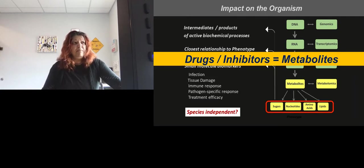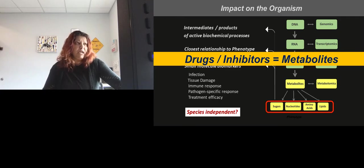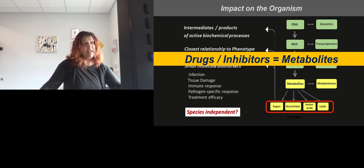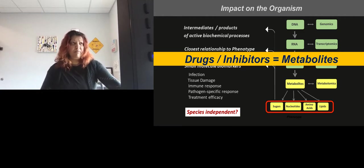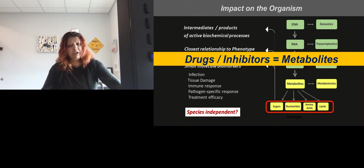Metabolites are intermediates and products of active biochemical pathways, making them the most direct relationship to a phenotype. If you measure them, you can identify small molecule biomarkers of infection, tissue damage, immune response, pathogen-specific response, and treatment efficacy. The measurement of metabolites is a powerful conduit to gaining information about your disease state — and importantly, it is species-independent: glucose is glucose whether in a human, mouse, monkey, or mosquito. Most critically, metabolites are what your drugs and inhibitors are, so by looking at which natural metabolites are altered during infection, you're really identifying drugs that could alter that metabolic landscape.